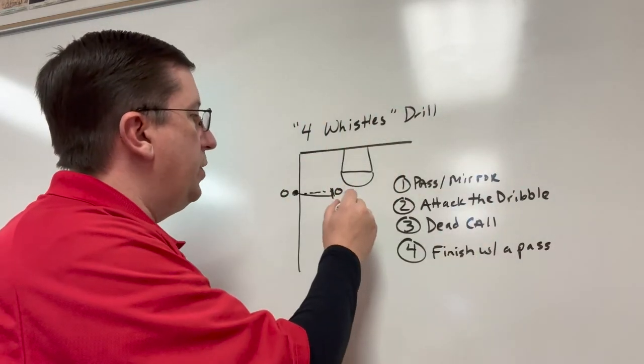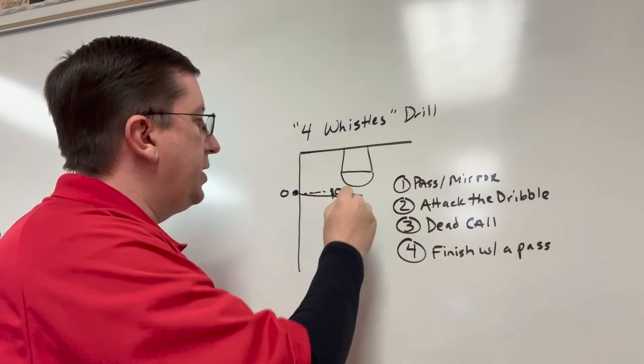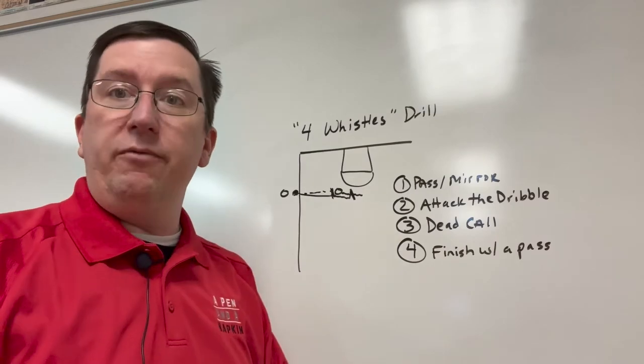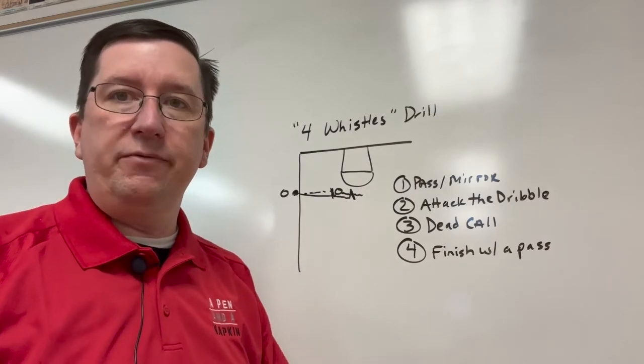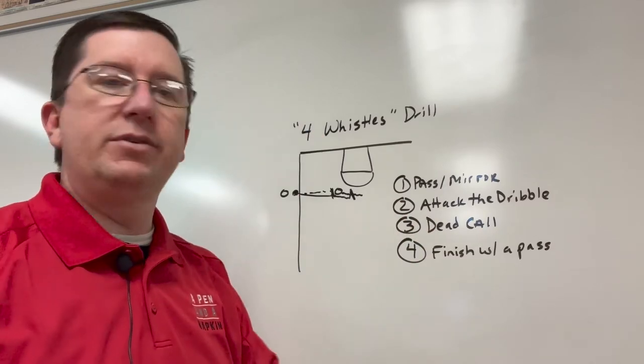On the second whistle, this player is going to start to dribble. This player, the defensive player, is going to continue to pressure them without fouling. Again, we emphasize to our players, fouling negates hustle. And they're going to put a lot of pressure on them for four, five, six seconds.